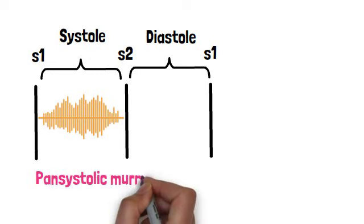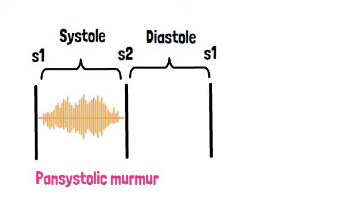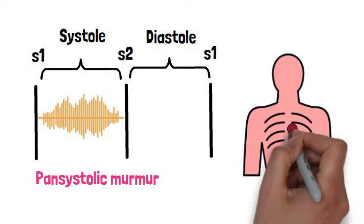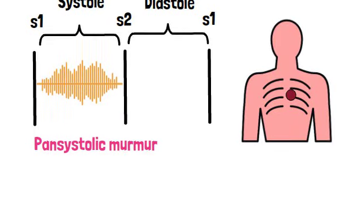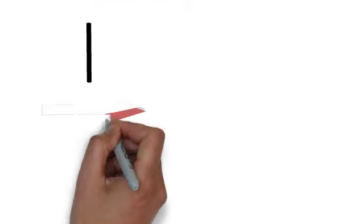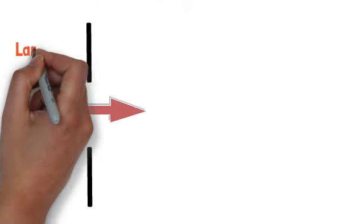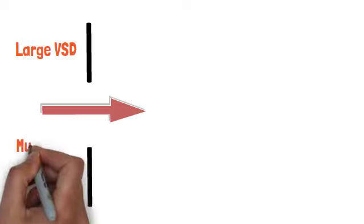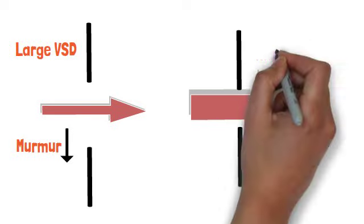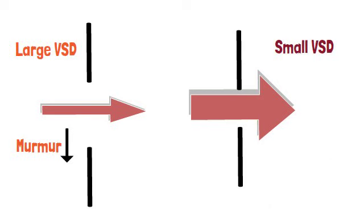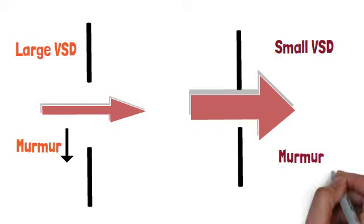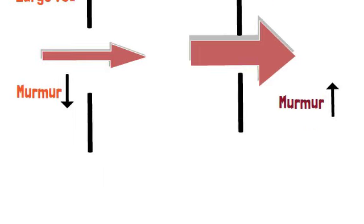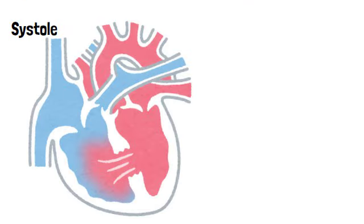Due to this, you will hear a murmur throughout systole but not during diastole. This murmur is called a pan-systolic murmur, and it is best heard at the left lower sternal edge. The intensity of the murmur is greater in smaller ventricular septal defects than in larger ones, because when a large amount of blood passes through a small area it produces more sound.